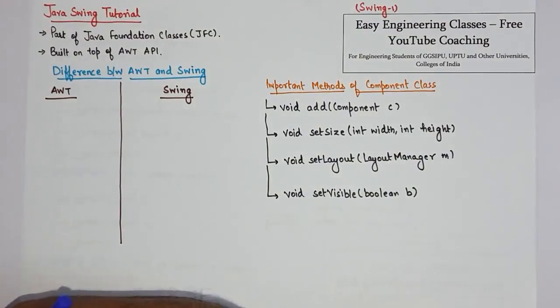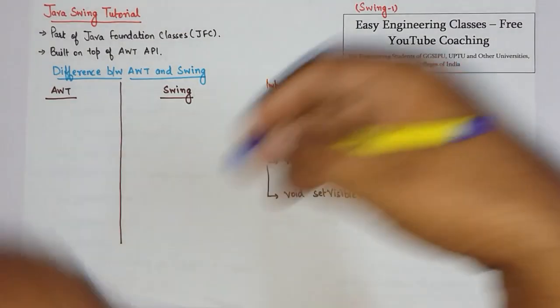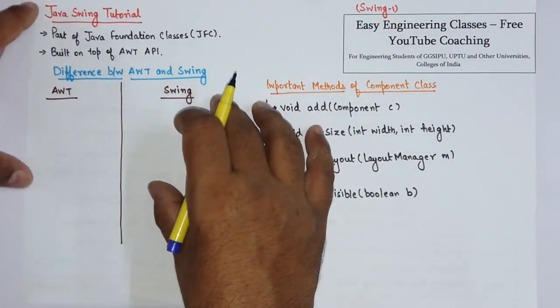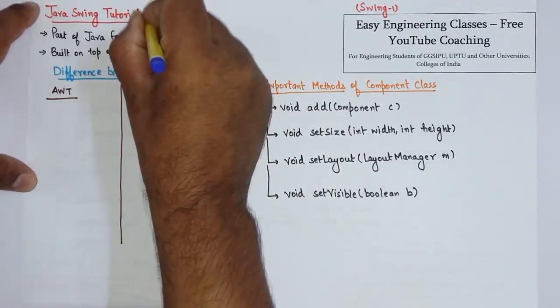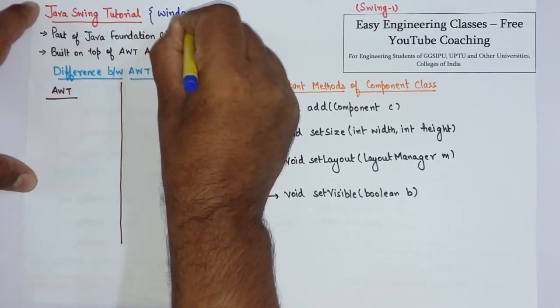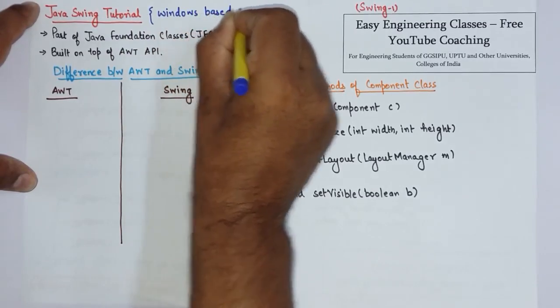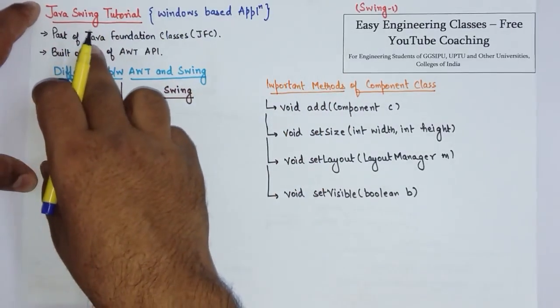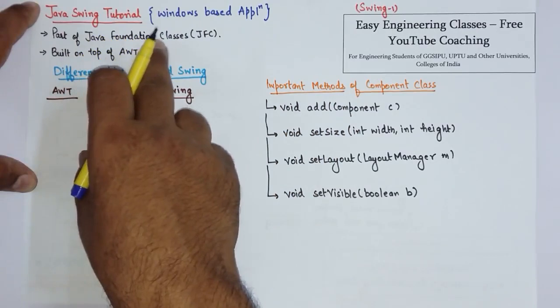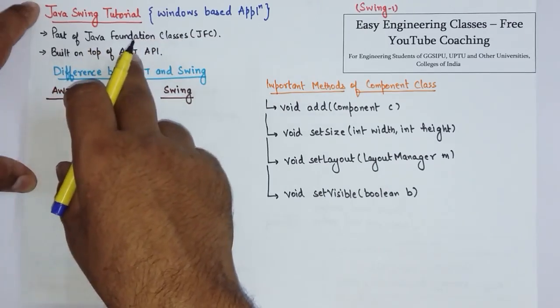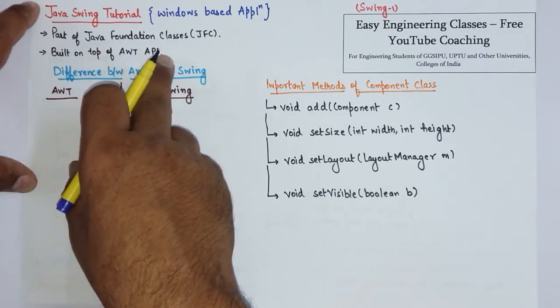Hello students, from this class onwards I am starting the tutorial series of Java Swing. Java Swing are used to create windows-based applications just like Java AWT package. Java Swing are part of Java Foundation Classes, that is JFC, which is built on top of the Abstract Window Toolkit or AWT API.